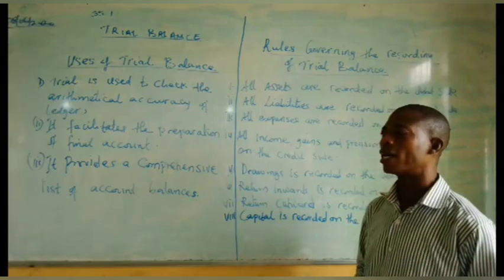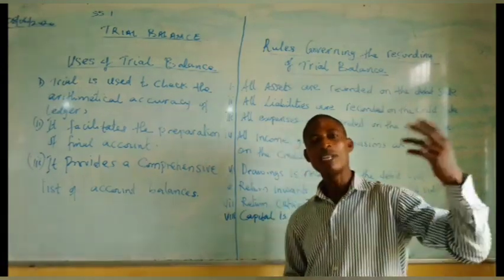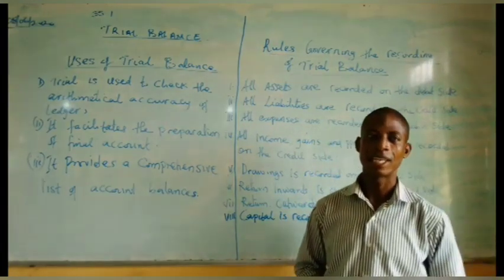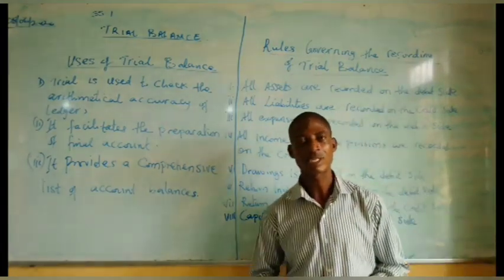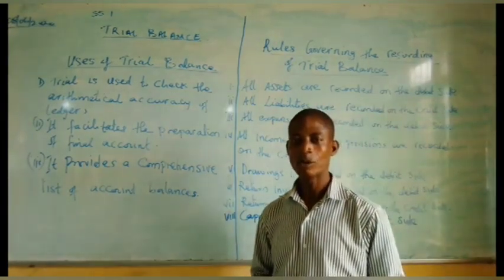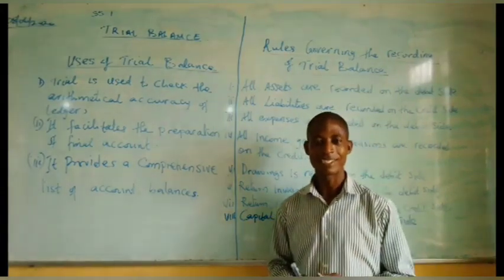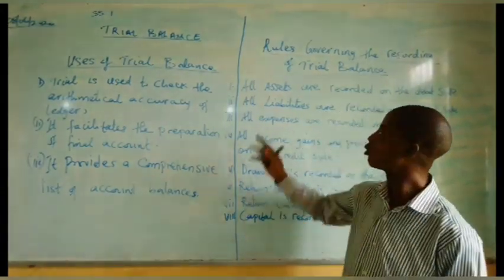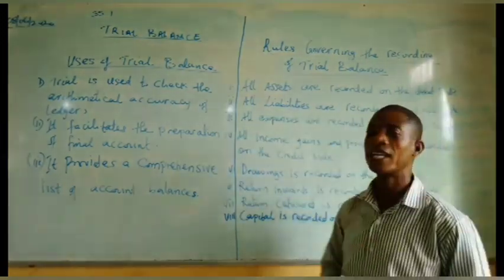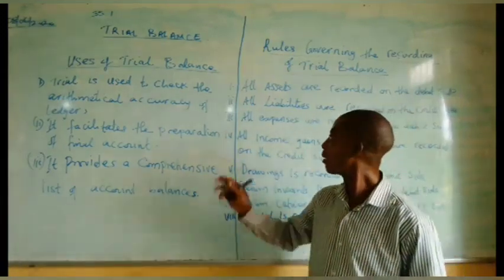Rule two: all liabilities are recorded on the credit side of the trial balance. Examples of liability accounts from the ledger include creditors accounts and loan accounts. All these liabilities will be recorded on the credit side of the trial balance.